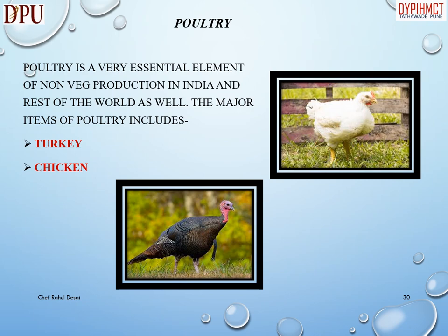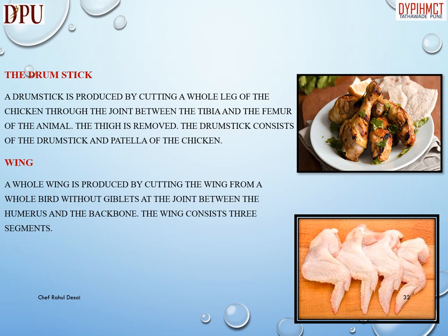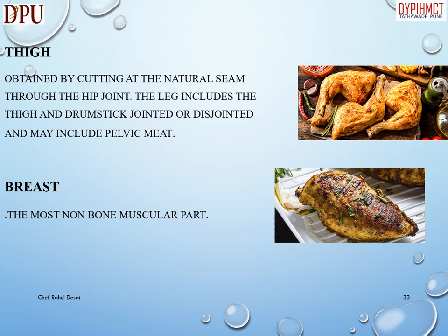Poultry is a very essential element of non-vegetarian food production in India and the rest of the world. The major items of poultry include chicken and turkey. A chicken can either be used as a whole bird or be divided into four different cuts: the drumstick, wing, thigh, and breast. A drumstick is produced by cutting a whole leg of the chicken through the joint between the tibia and the femur of the animal. A whole wing is produced by cutting the wing from a whole bird at the joint between the humerus and the backbone, and consists of three segments. The thigh is obtained by cutting at the natural seam through the hip joint, and the leg includes the thigh and drumstick jointed or disjointed, and may include pelvic meat.